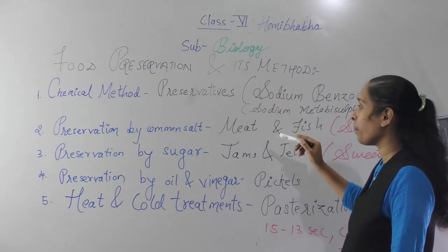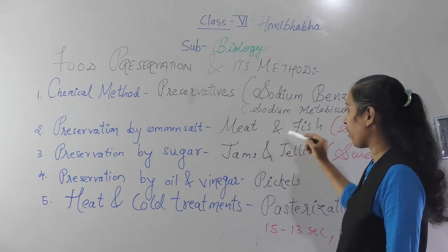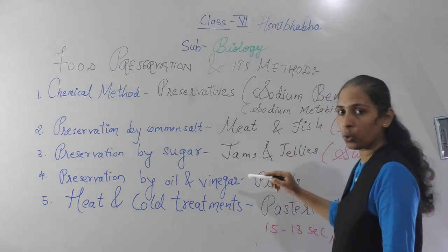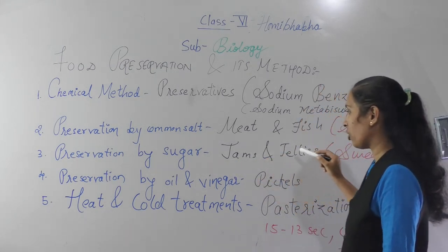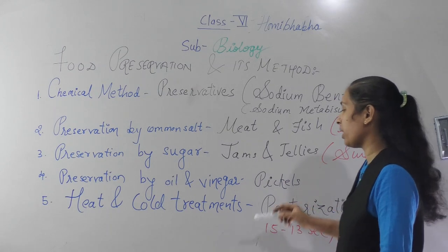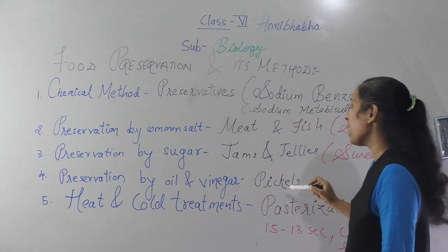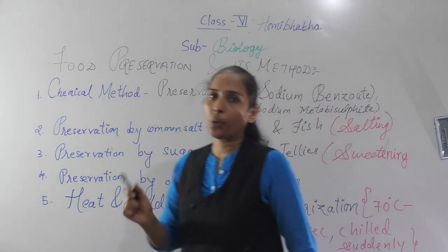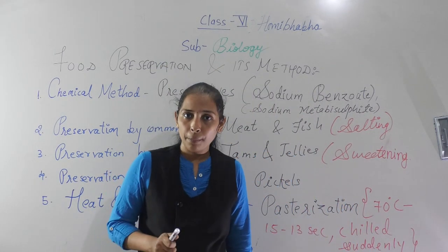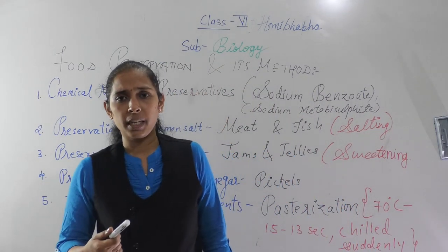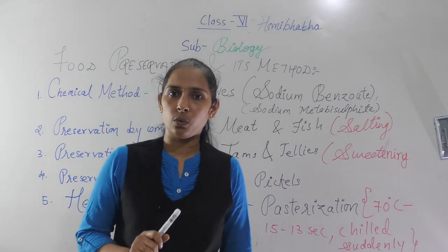Preservation by common salt is used mostly for meat and fish. Preservation by sugar is used for jams and jellies. With the help of oil and vinegar we can preserve pickles. So this is all about today's lesson. For the next period we will see the next point. Thank you.